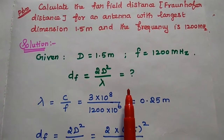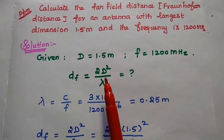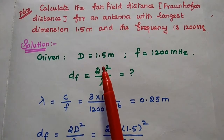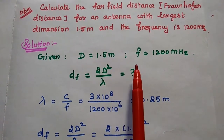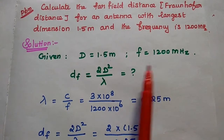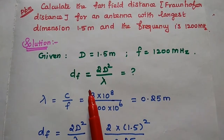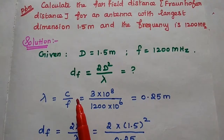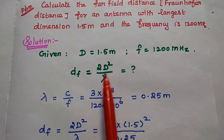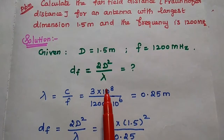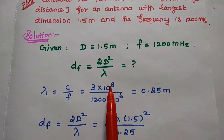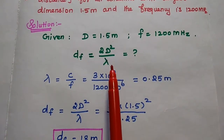In the solution part, first we have to write the given data. The dimension is given as 1.5 meter and the frequency is 1200 MHz. We are going to find out the far field distance using df = 2D² / λ. Since frequency is given, we can calculate the value of λ.